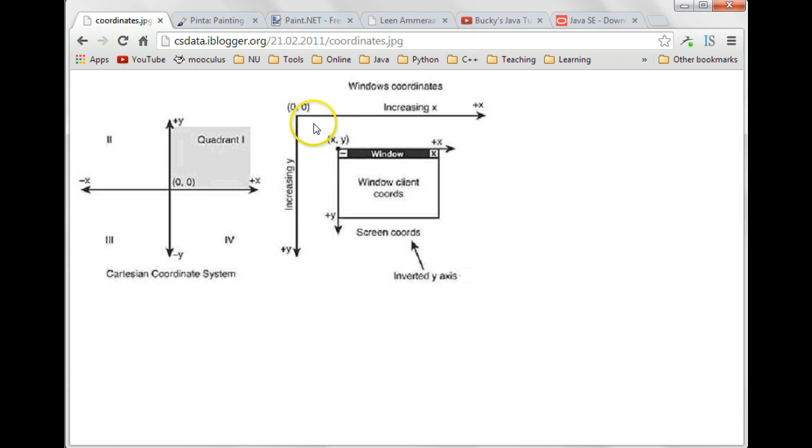For device coordinates, the origin is in the upper left corner. The X coordinates still increase to the right, but the Y coordinates increase going down.